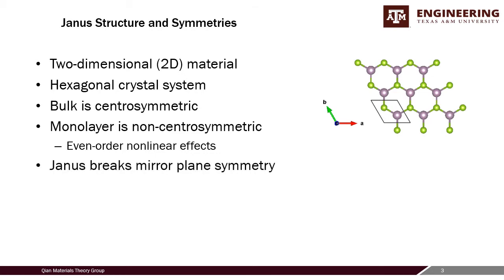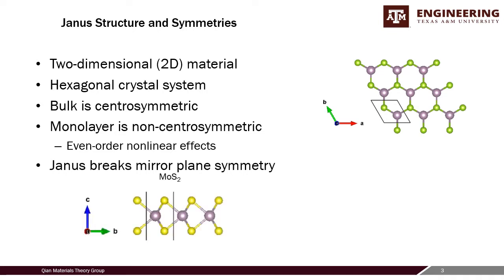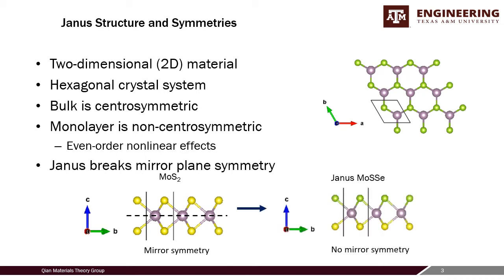In the Janus material, we replace one layer of atoms, which breaks the mirror plane symmetry. MoS₂ has a horizontal mirror plane — you can see the c-axis in the vertical direction — but if you replace the top layer with selenium, you no longer have that mirror plane symmetry, which reduces the overall symmetry of the structure.